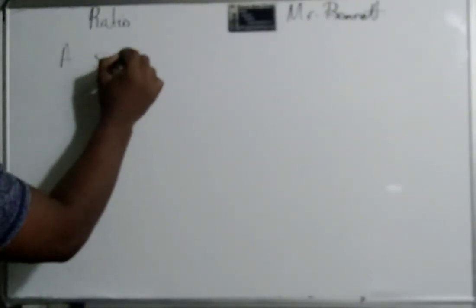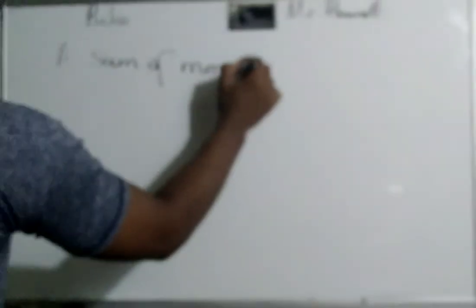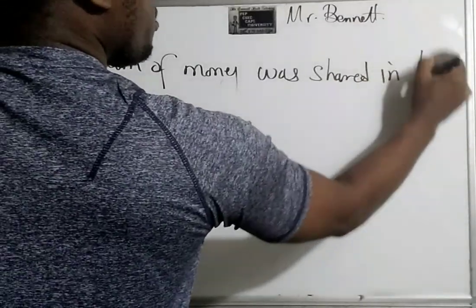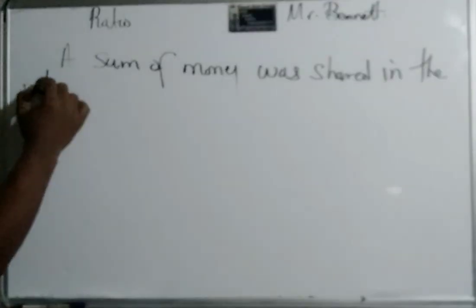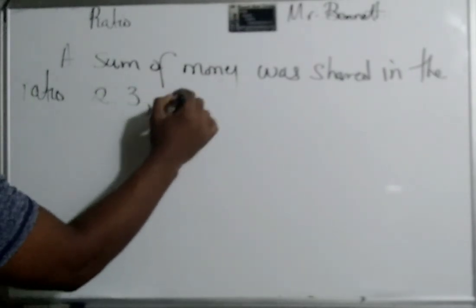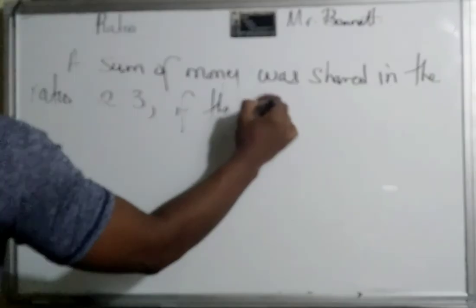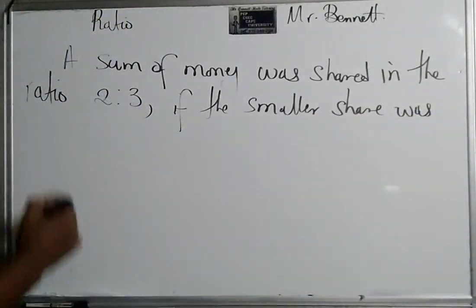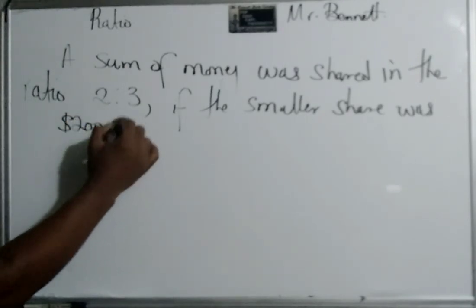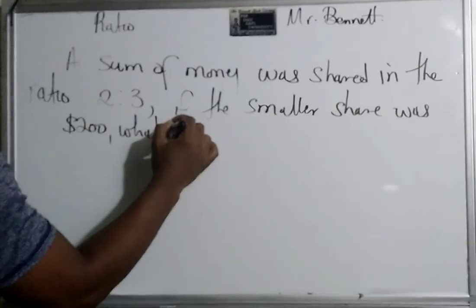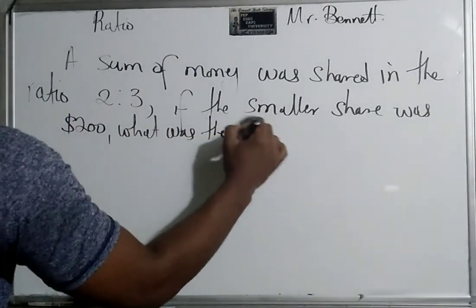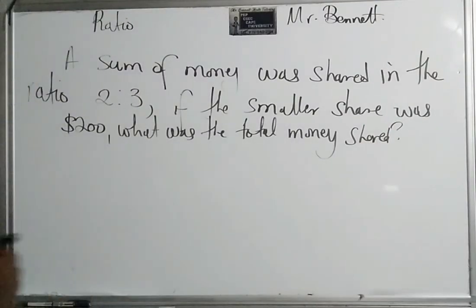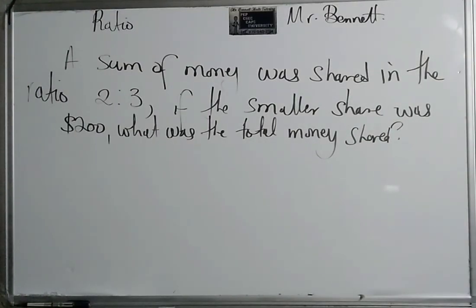This one says a sum of money was shared in the ratio 2 to 3. If the smaller share was, or is, two hundred dollars, what was the total money shared?